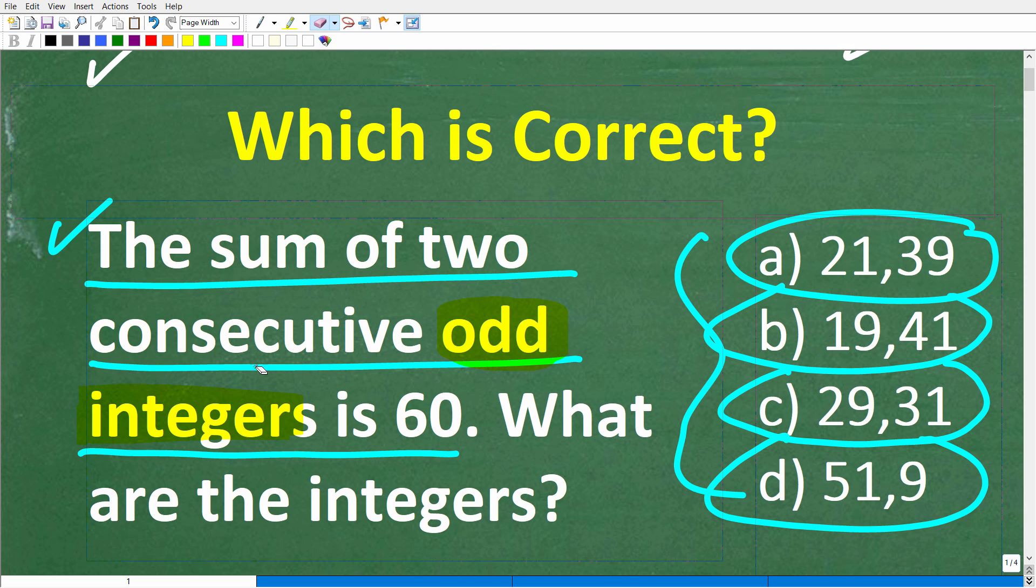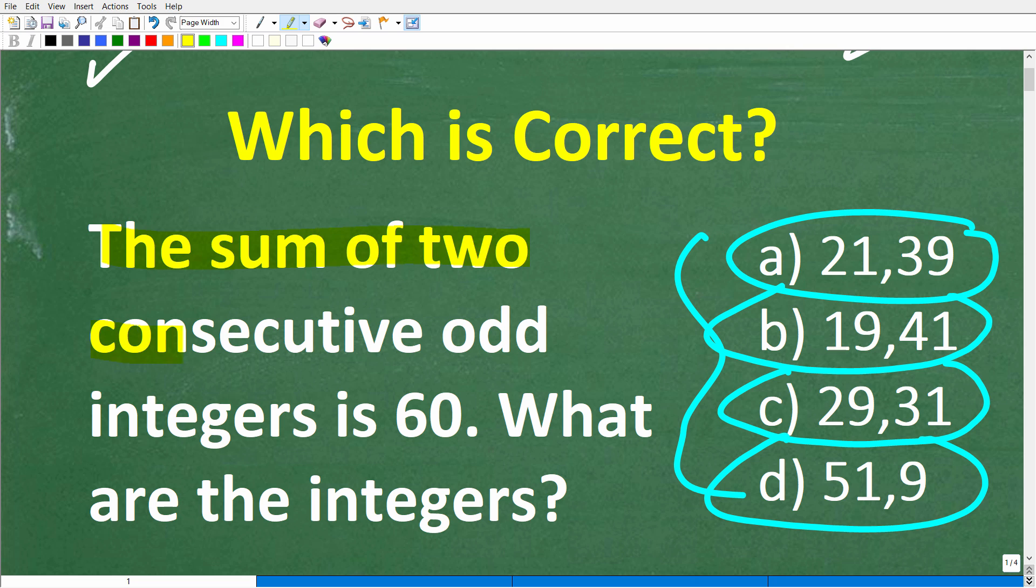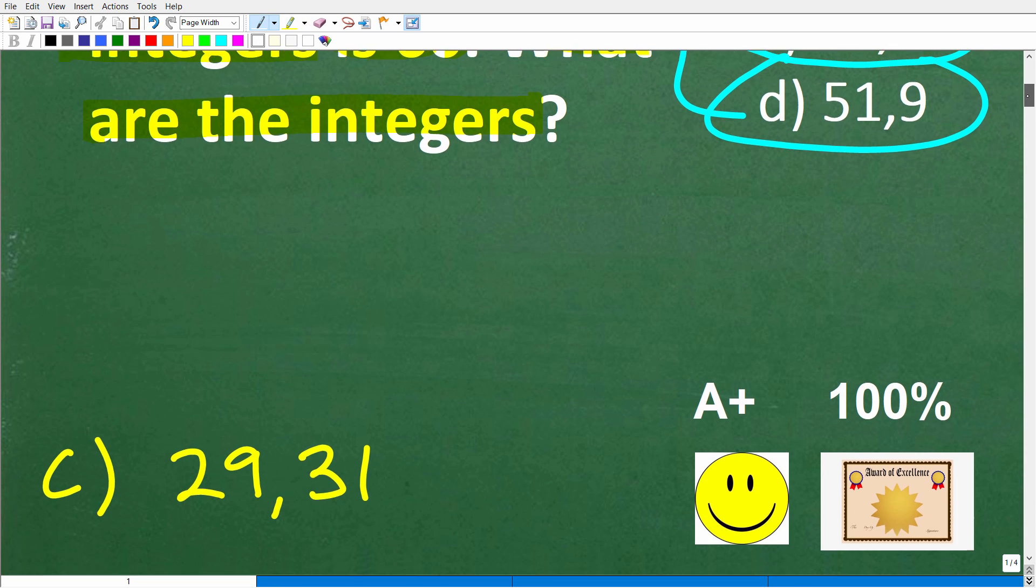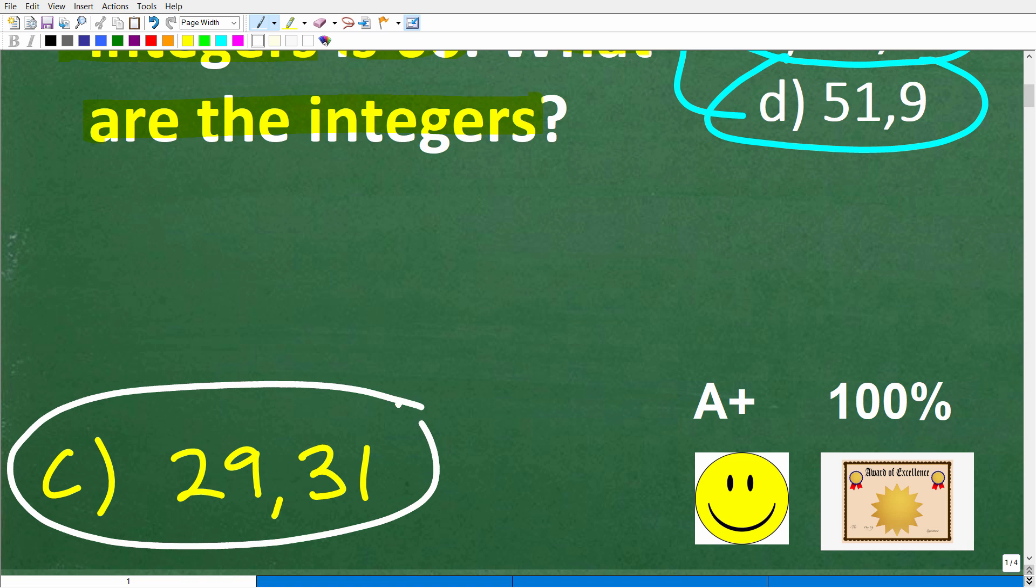All right. So let's take another look at this problem. It says the sum of two consecutive odd integers. Well, if you don't know what a consecutive odd integer is, or integers, you're going to have a tough time knowing what to do. But assuming you do, the problem is the sum of these two consecutive odd integers is 60. What are the integers in question? Well, the correct answer here is C, 29 and 31.